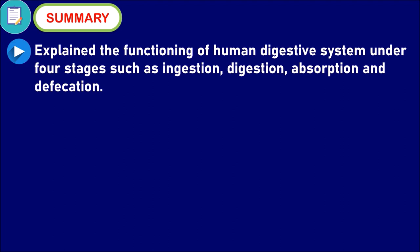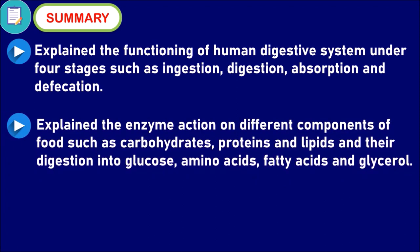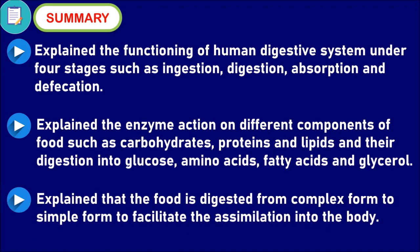In summary, this video explained the functioning of the human digestive system under four stages: ingestion, digestion, absorption, and defecation. We also explained the enzyme action on different food components — carbohydrates, proteins, and lipids — and their digestion into glucose, amino acids, fatty acids, and glycerol. We also learned that food is digested from complex substances to simple substances to facilitate assimilation into the body.